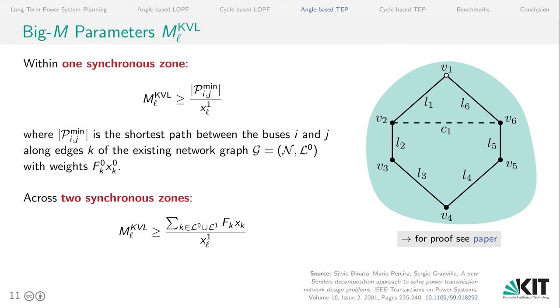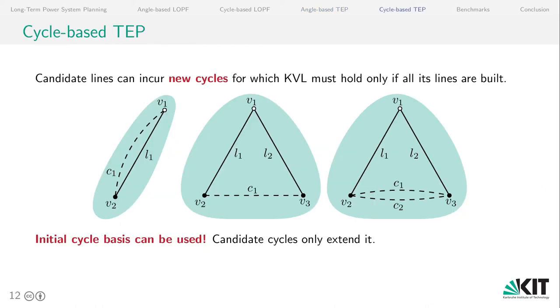It gets a little bit more difficult if there are two synchronous zones to be connected, but there's a workaround for that as well, which has been shown in previous papers already, which is a slightly larger value and very prone to numerical issues. Let's see if we can make it better when using the cycle-based formulation.